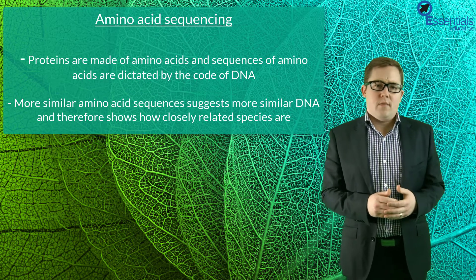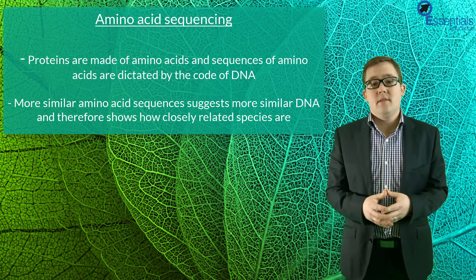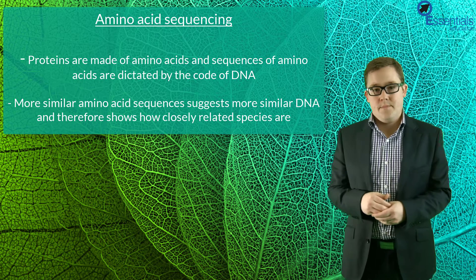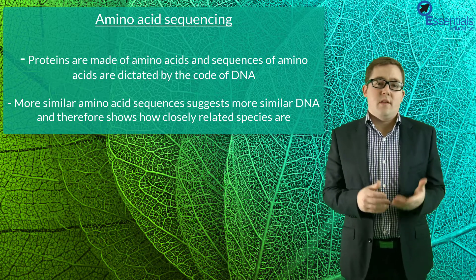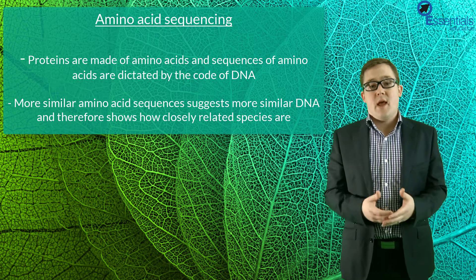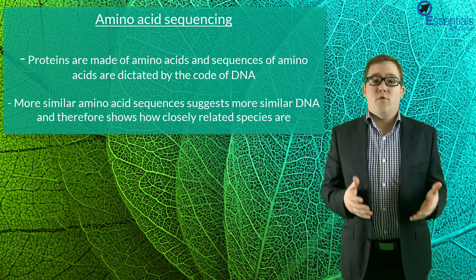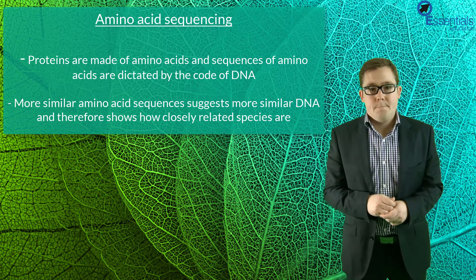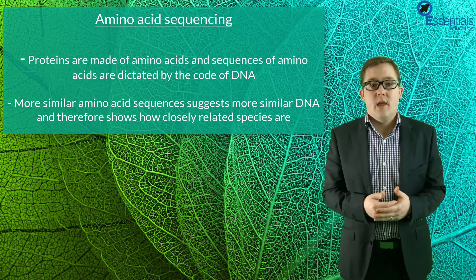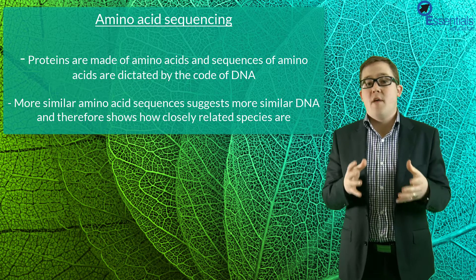Let's start with amino acid sequencing. From previous sections in this course, we know that proteins are made of a sequence of amino acids, and that those sequences are dictated by the code of bases in DNA. So it should make logical sense that if scientists compare amino acid sequences from proteins of two different species, then the degree of similarity between them should correlate with the similarity in DNA sequences, and therefore show how closely related they are. To compare proteins between species, scientists need to identify proteins that have been maintained throughout evolutionary history, meaning they're crucial to the survival of most species.